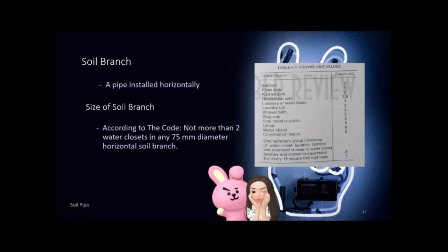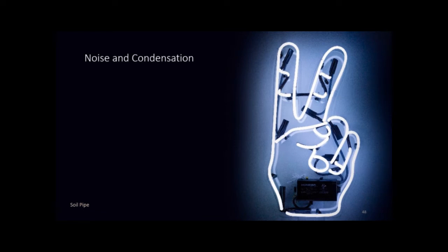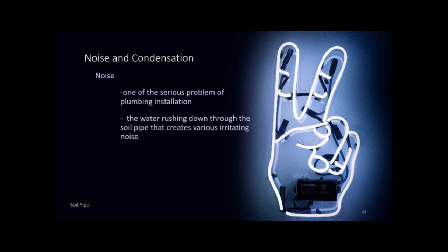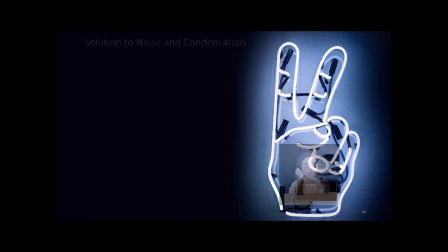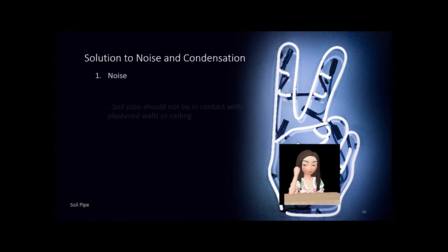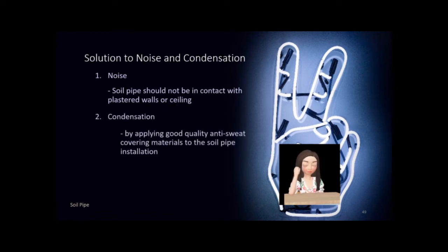The soil pipe is any pipe that receives and conveys discharges of water closets, with or without discharge from other fixtures, to the house drain or house sewer. There is no definitive mathematical formula to determine the size of the soil pipe, but it uses the fixture unit method. Experiments showed a 100 mm diameter soil pipe can effectively serve up to 140 water closets. The soil branch is a soil pipe installed horizontally with lateral or vertical connections receiving water closet discharges. Not more than two water closets shall discharge into any 75 mm diameter horizontal soil branch. Noise from the soil pipe and condensation causing dripping are serious problems; soil pipe should not be in contact with plastered walls, and anti-sweat covering materials should be applied.